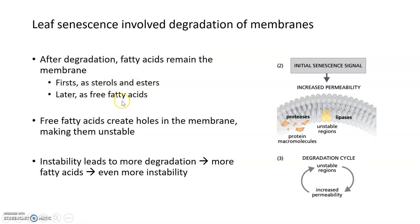The free fatty acids can actually create holes within the membrane, making them even more unstable. And so it leads to a vicious cycle where unstable regions generated by free fatty acids in the membrane generate holes, and that increased permeability leads to even more unstable regions, even more fatty acids, even more instability, and more holes within the membrane.